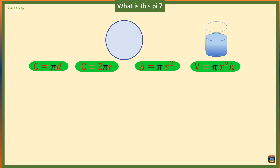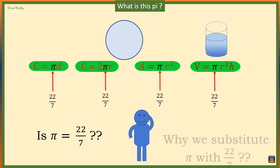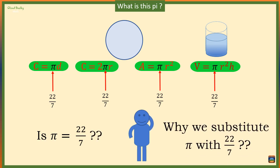We often substitute the symbol pi with 22 over 7. Is pi equal to 22 over 7? Why do we substitute pi with 22 over 7? These are the two questions this video is going to answer today in a simple way.